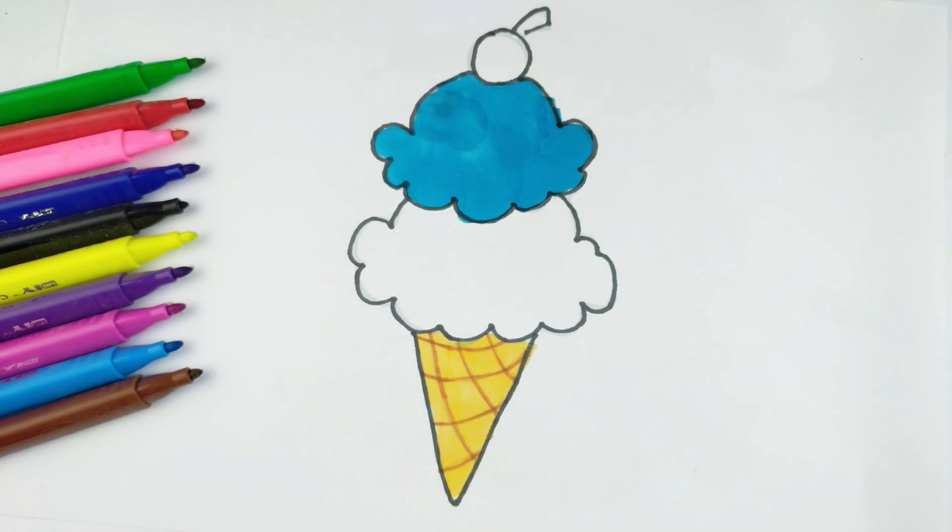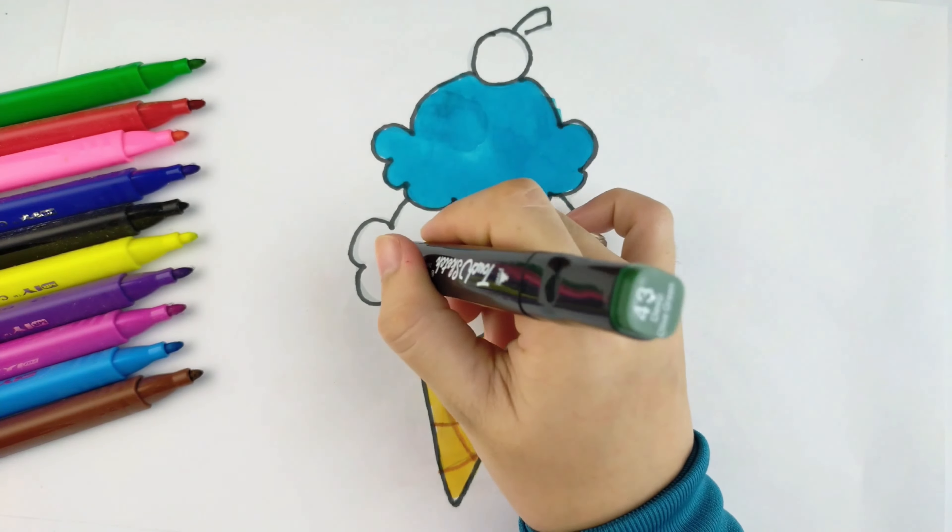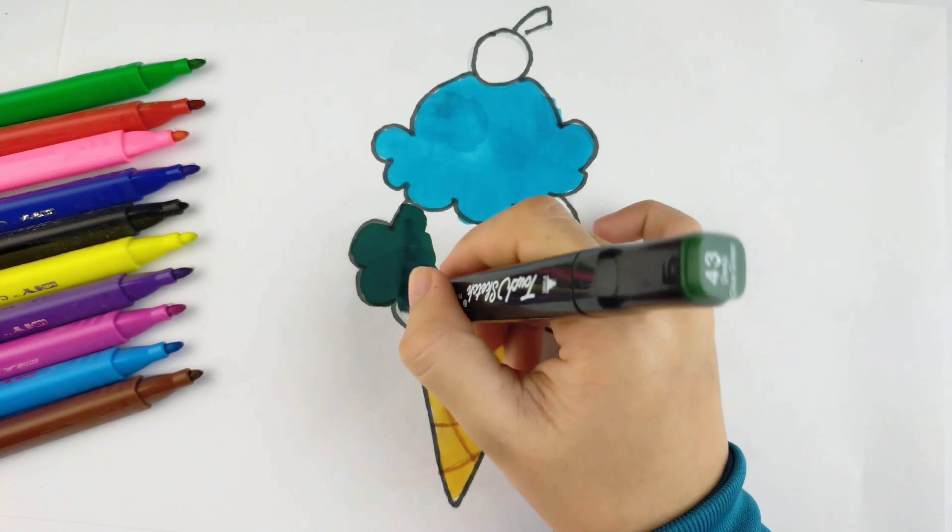The blue ice cream is bubble gum flavor. And the second ice cream, we color with green color.